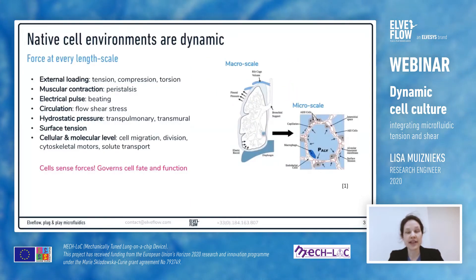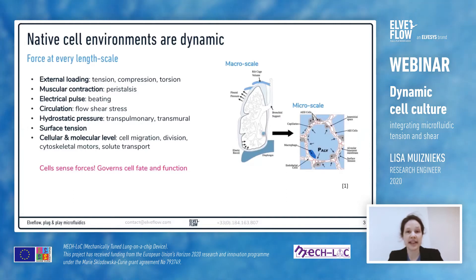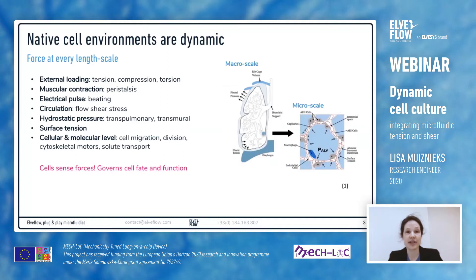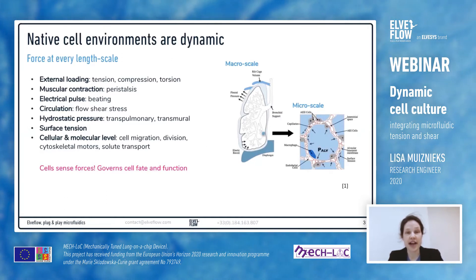Forces are abundant in the body and in particular native cell environments are crowded and dynamic, and these forces can come from every length scale. They can include large-scale coordinated motions of walking or moving that put tension, torsion, or compression on the cells in the body. Muscular contractions can also be involuntary, for example peristalsis.